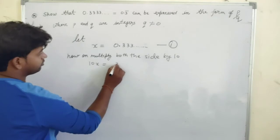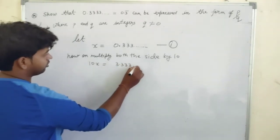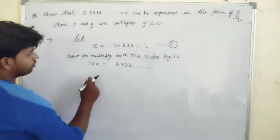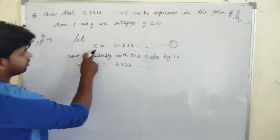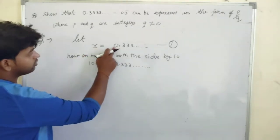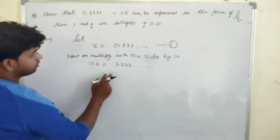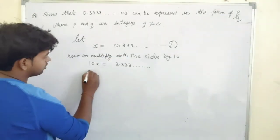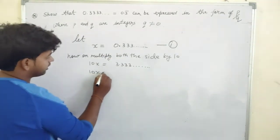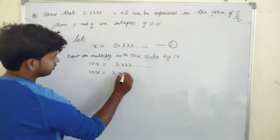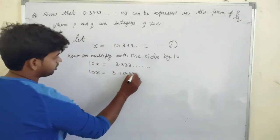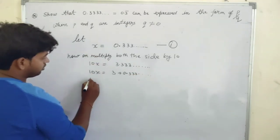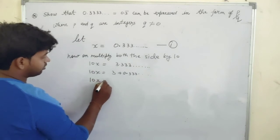We get 3.333 dot dot dot. Clear? Now if you see that the value of x is 0.333, and 10x equals 3.333, we can write 10x equals 3 plus 0.333. The value of 0.333 is x, so 10x equals 3 plus x.